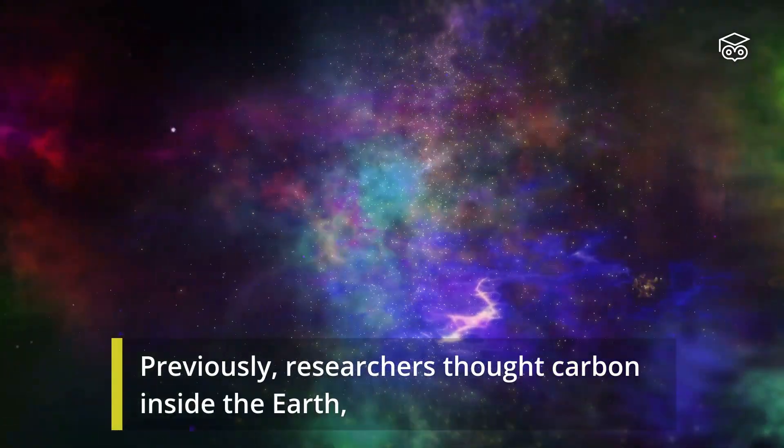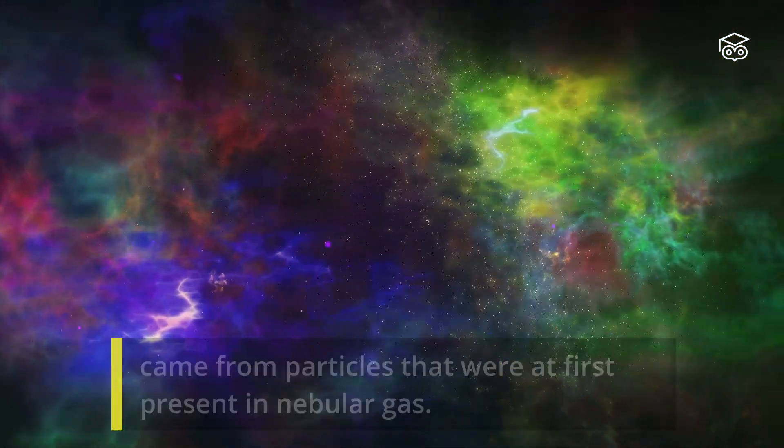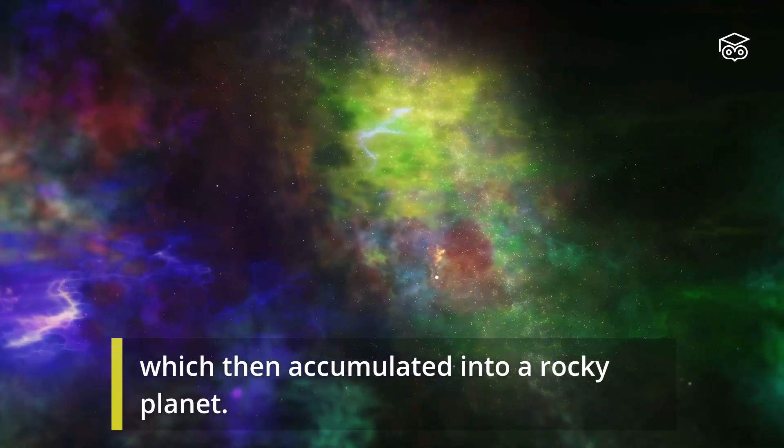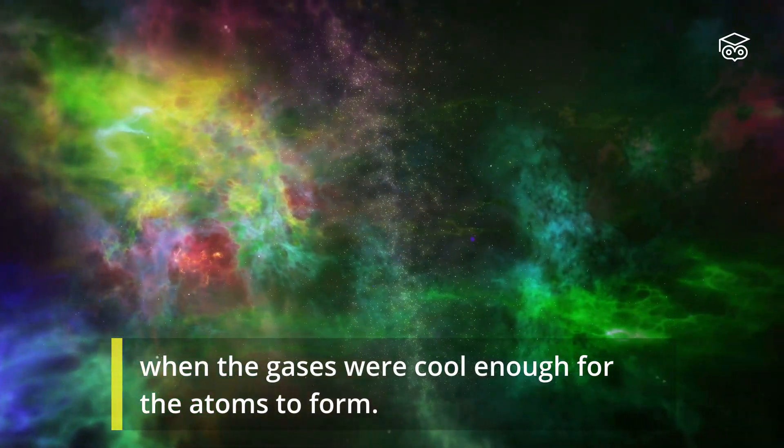Previously, researchers thought carbon inside the Earth came from particles that were initially present in nebula gas, which then accumulated into a rocky planet when the gases were cool enough for the atoms to form.